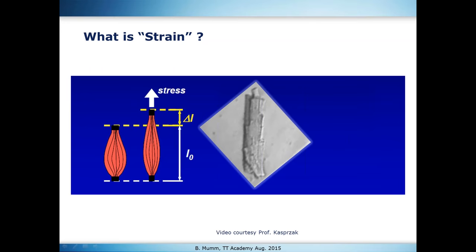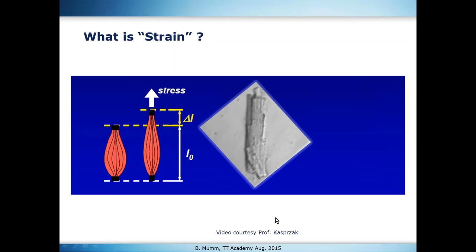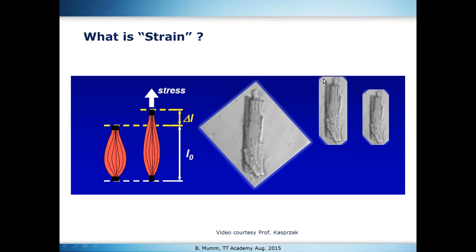Let me show you a microscopic video of a contracting muscle fiber. It shows us how a muscle contracts — from its extended length to a shrunken length. In this example, we have a 15 percent shortening. Shortening means it is a negative strain. So if we call that global longitudinal strain, we would have a minus 15 percent GLS.